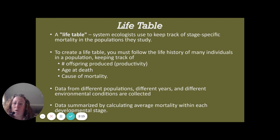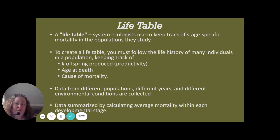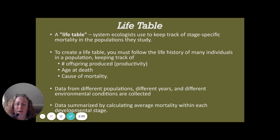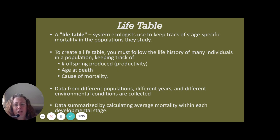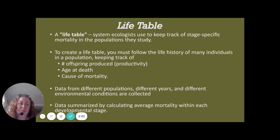Creating this life table takes a lot of studying of the population and the individuals. We need to know how many are reproducing, when they're reproducing, how many offspring they're having each time, how many survive, how old they are when they die, and why they're dying. This data takes years to come together, unless you're studying a short-lived population like an insect.